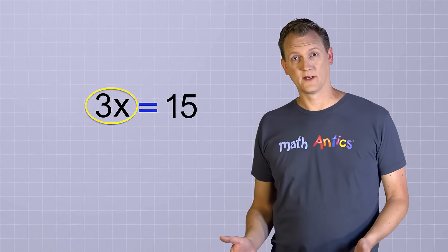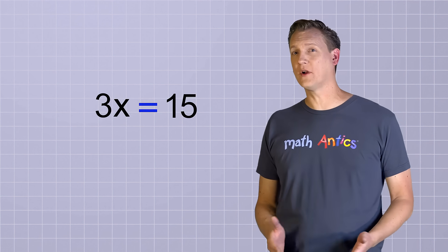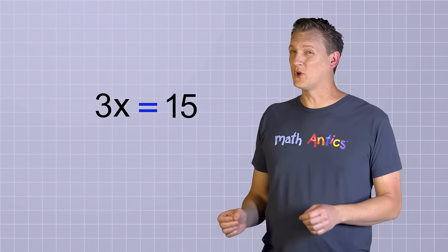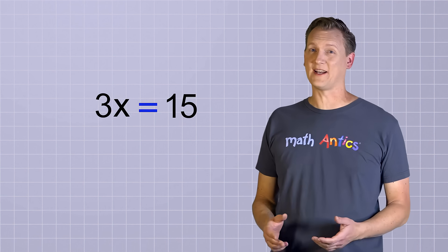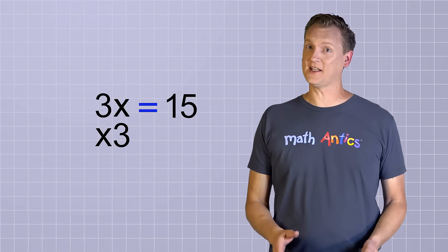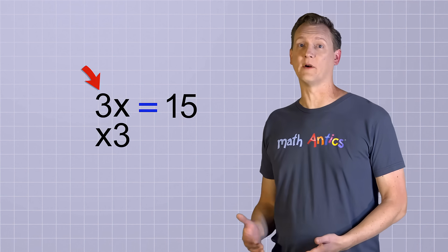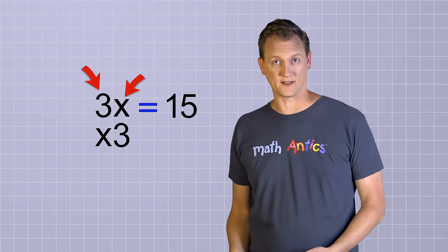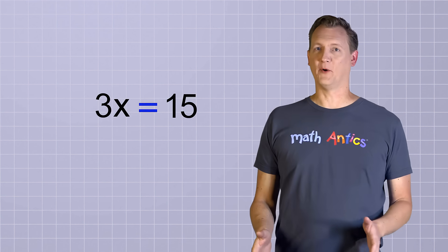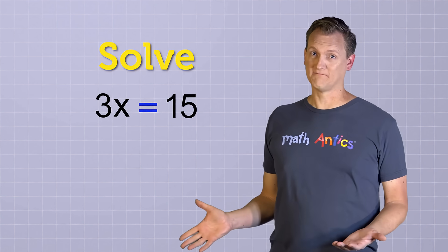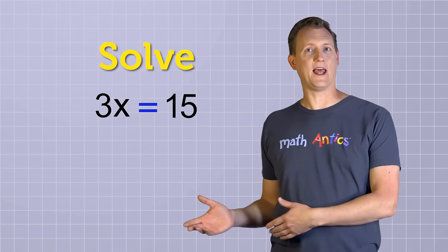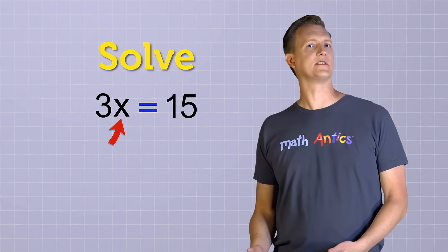So when you see a number and a symbol right next to each other like this, with no operation between them, it means they're being multiplied. So 3x is the same as 3 times x. Oh, and just a side note: since in multiplication, the order of the numbers doesn't matter, you could switch the order and write x3, but it's customary to always list the known number first and the unknown number second. Alright, but we need to solve this equation, right? That means we need to get the unknown, x, all by itself on one side of the equal sign.